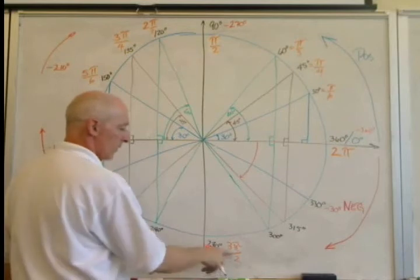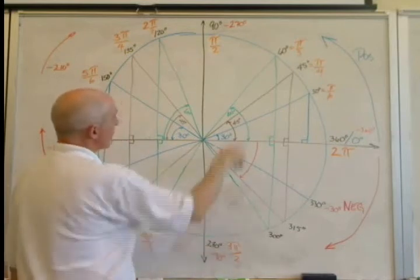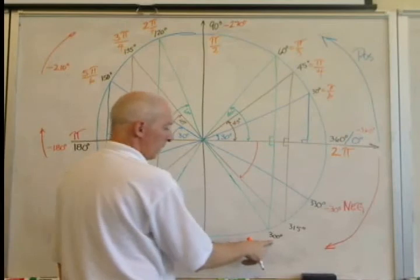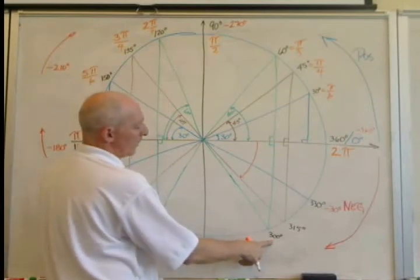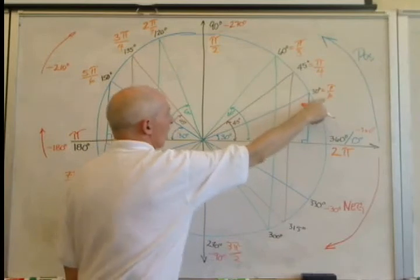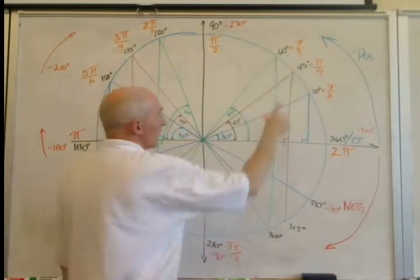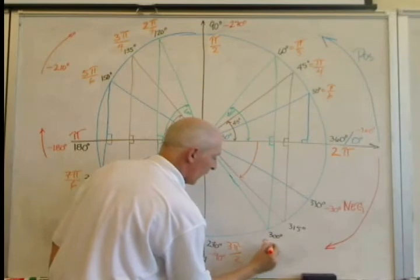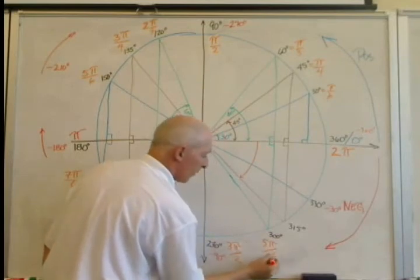270 degrees, 3 pi over 2, 3 of these 90's. 300 degrees, well, we can do 10 of those, or 5 of these. That's what we'll reduce to. 5 pi over 3.